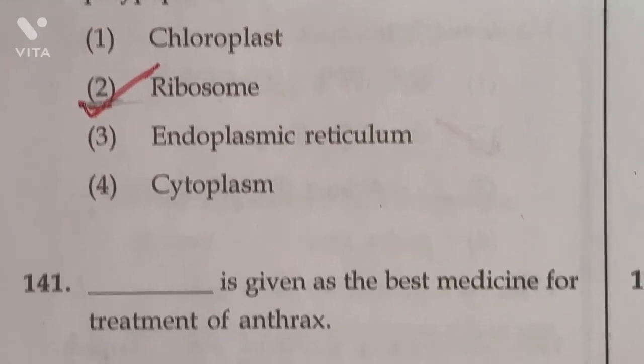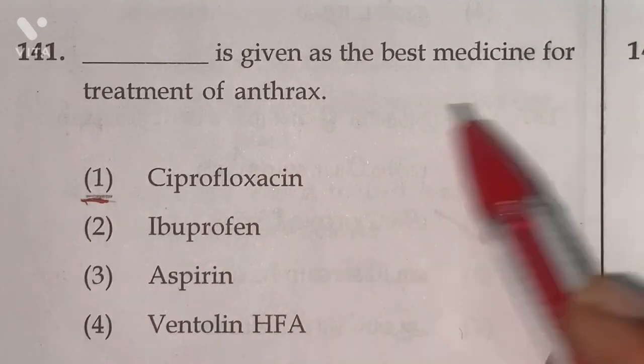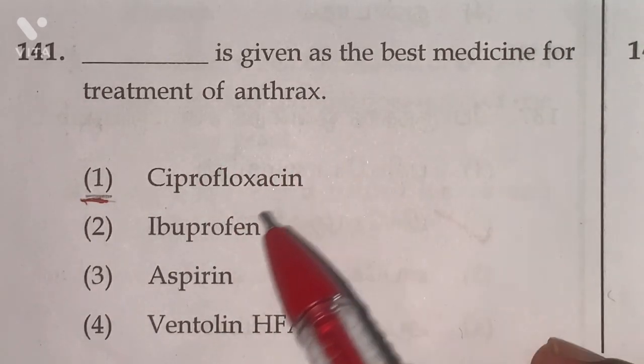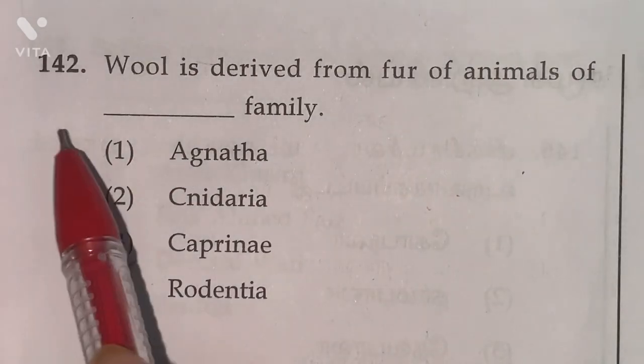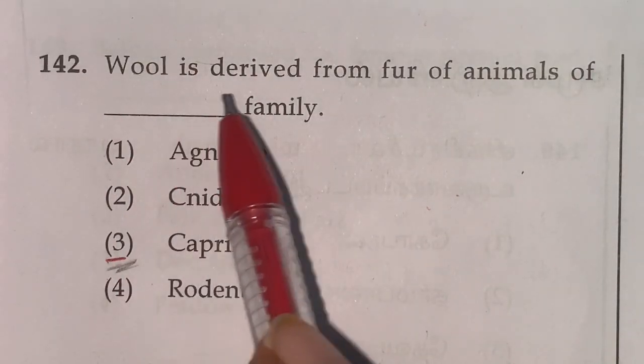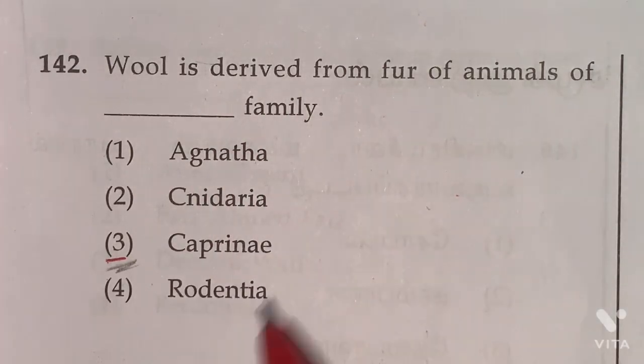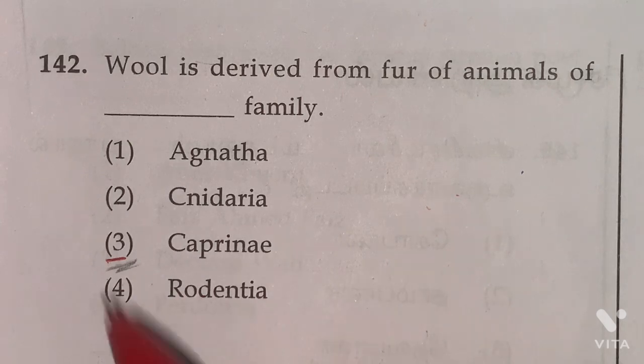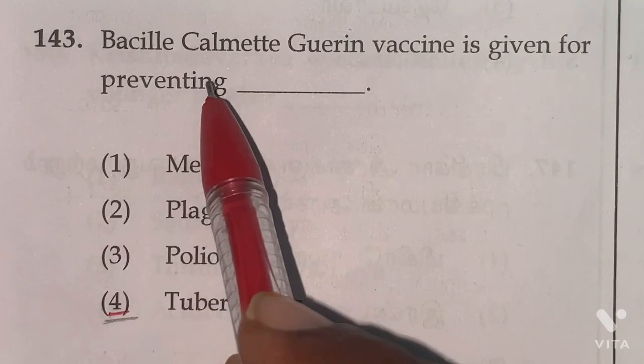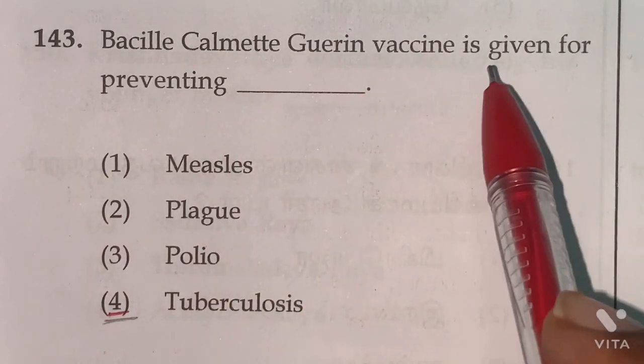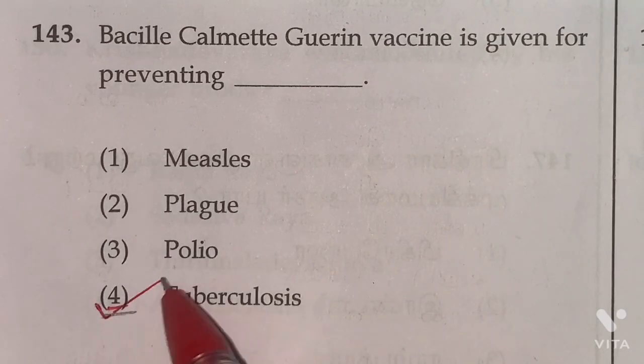141. Ciprofloxacin is given as the best medicine for treatment of anthrax. Option 1 is the right answer. Question number 142. Wool is derived from fur of animals of camel family. Option 3rd one is the right answer. 143. Bacille Calmette-Guerin vaccine is given for preventing tuberculosis. Option 4th one is the right answer.